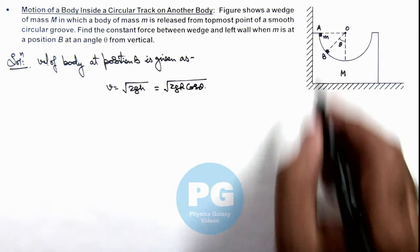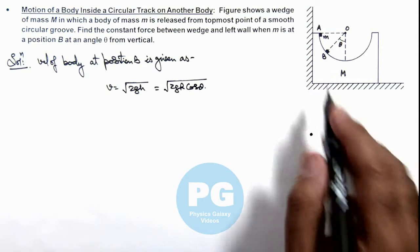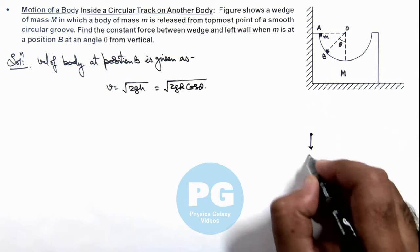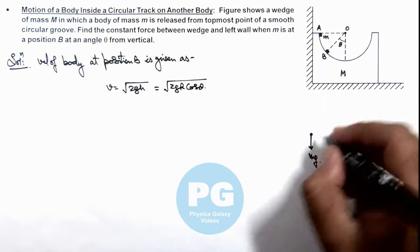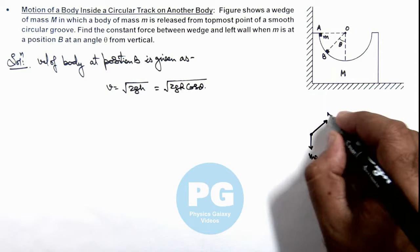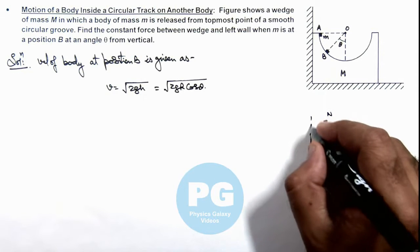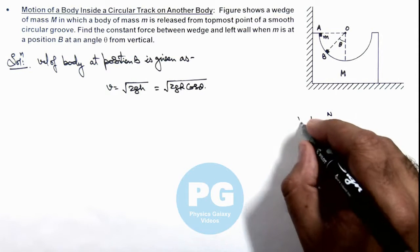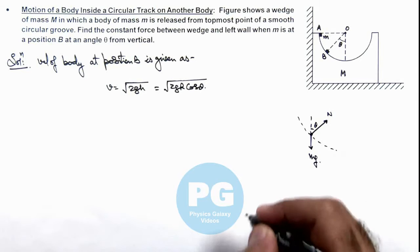Now if we draw the free body diagram of this body at point B, it is experiencing mg in downward direction and its normal reaction is here, which is at an angle theta from vertical and this is the surface of groove along which it is moving.